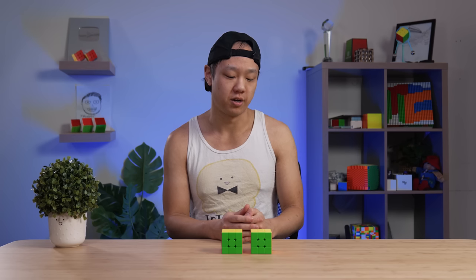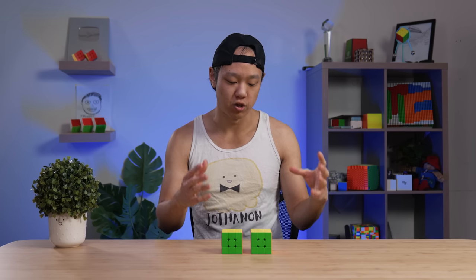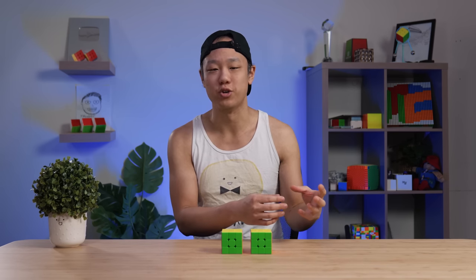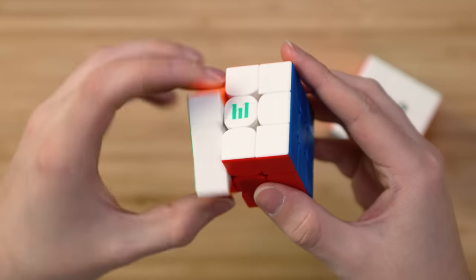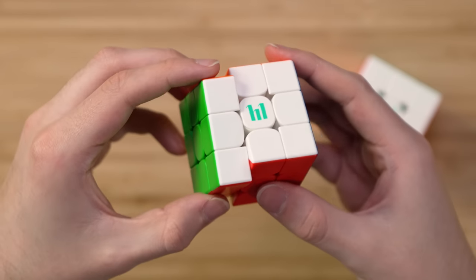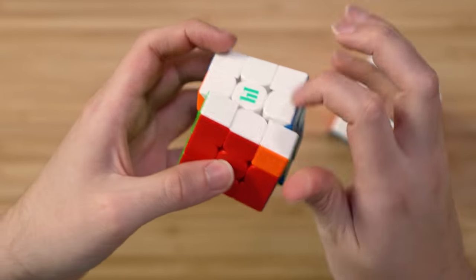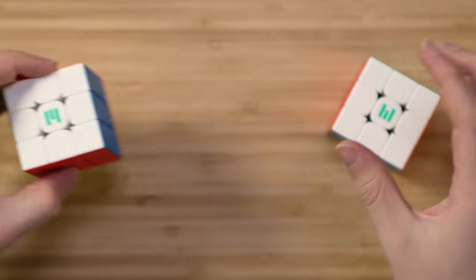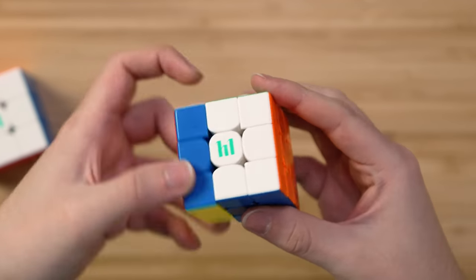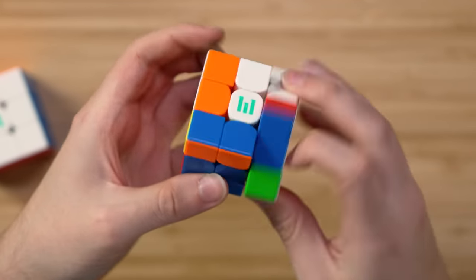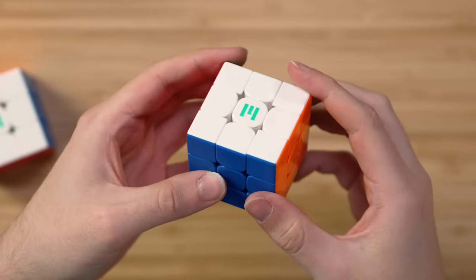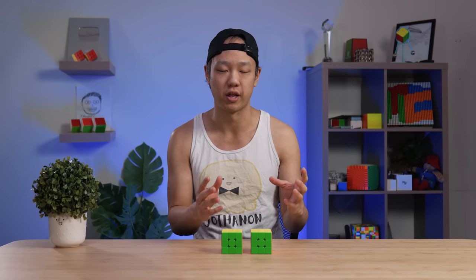One thing a lot of people comment on is the difference between the cube once it's broken in versus when the cube is first received. When you first receive this cube, it might feel sandy because it's not very well lubed from the factory. That's completely okay. Once you break it in and add some of your own lube, it actually turns really well, and that sandiness completely goes away. I think that happens a lot with MoYu cubes. You just need to give it a little time to break in, and then it'll feel like a much better cube.